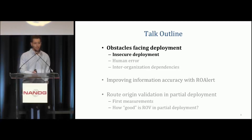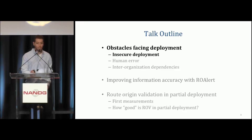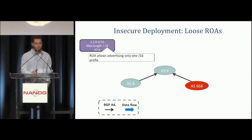I'm going to divide the remainder of this talk into three parts. The first is about obstacles facing the deployment of RPKI, starting with insecure deployments. Like any security mechanism, it allows freedom of choice — you might deploy it in an insecure manner. Specifically, I'm going to talk about what we call loose ROAs.